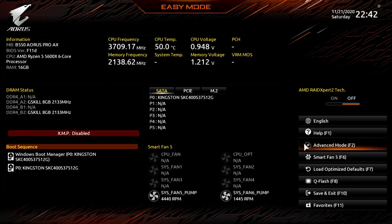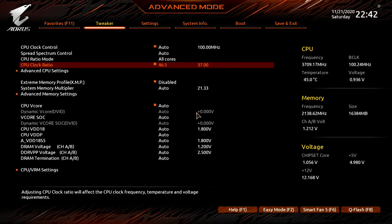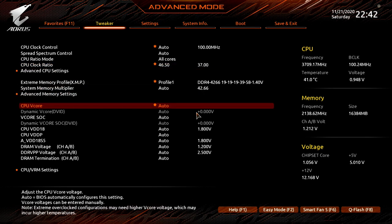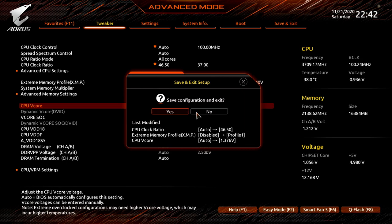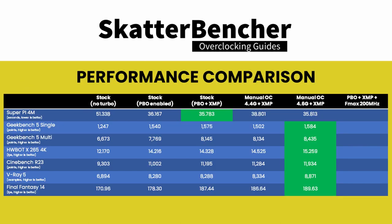Upon entering the BIOS, change to the advanced mode view. Set CPU clock ratio to 46.5. Set extreme memory profile to profile 1. Set CPU vCore to 1.376 volts. Then save and exit the BIOS. We reran the benchmarks and checked the performance increase compared to stock operation. As expected, the performance continues to rise. Most importantly, all our benchmarks are now above our stock performance.